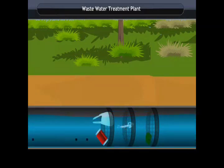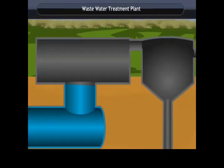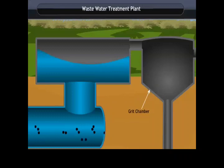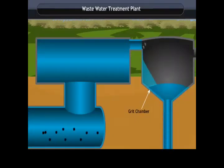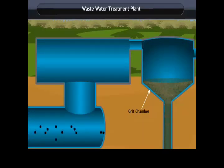Grit and Sand Removal. After the wastewater is treated through the bar screen, it goes into the grit and sand removal tank. In this tank, the flow of the water is slowed down to allow sand, pebbles and grit to settle down at the bottom of the tank.